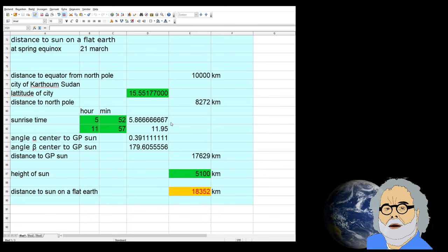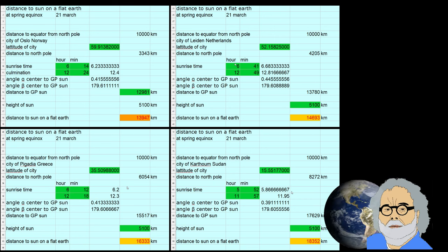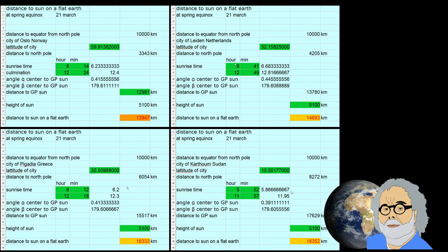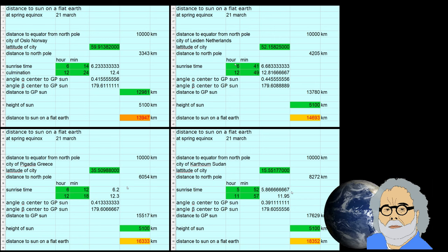The calculated distances to the sun were respectively 13,947, 14,693, 16,333 and 18,352 kilometers. So, the farther away from the north pole, the greater the distance to the sun at the moment of sunrise.